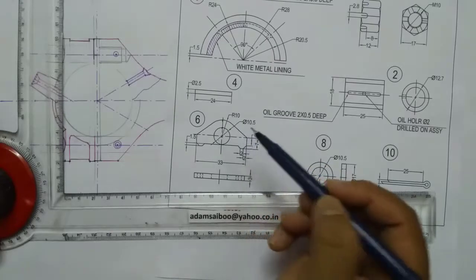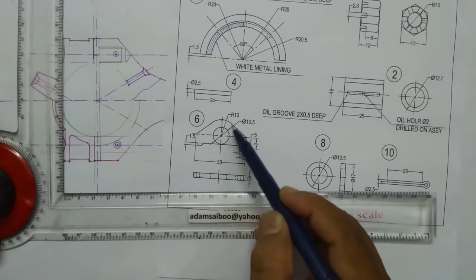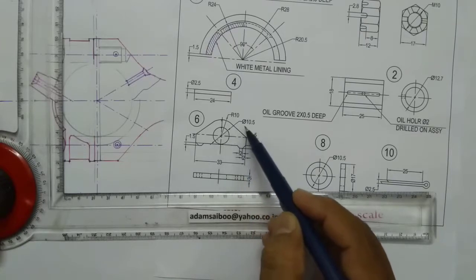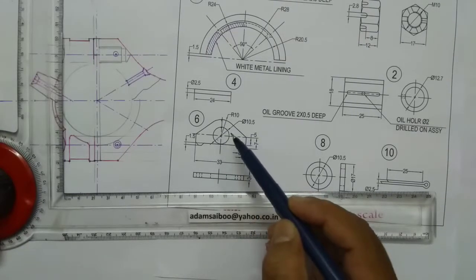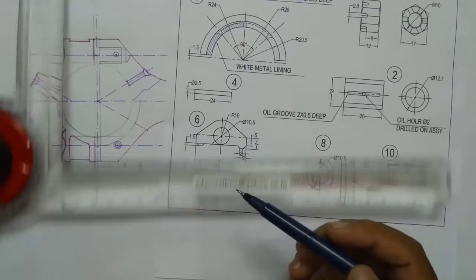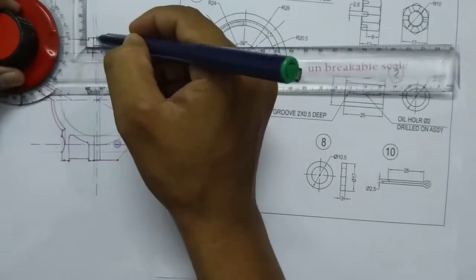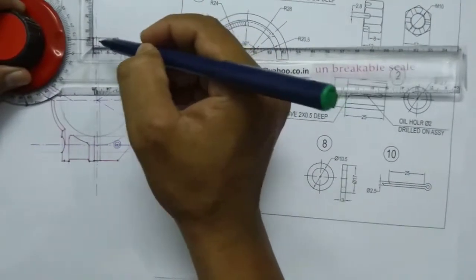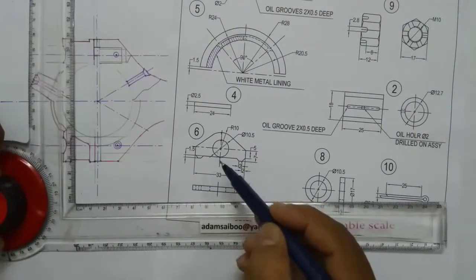This distance is 10mm and the whole diameter is 10.5, so this distance will approximately equal to 5mm. This distance is 5mm, then this point, the distance between these two points is 10.5.